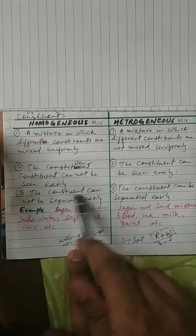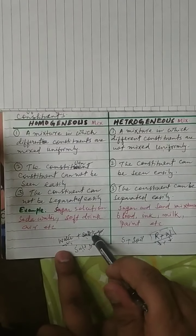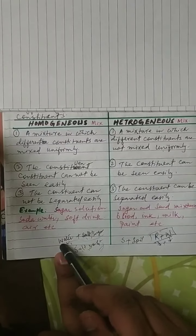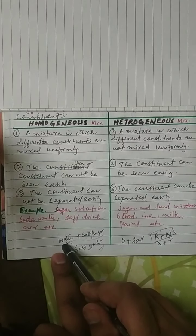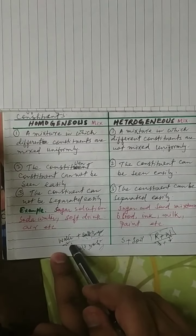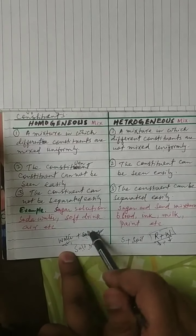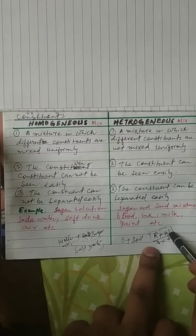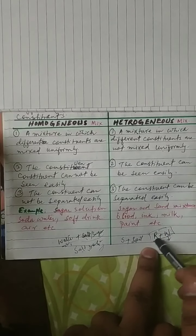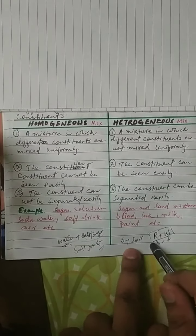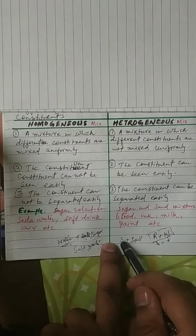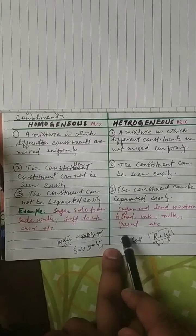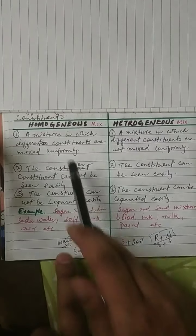Number 3: in a homogeneous mixture, the constituents cannot be separated easily. For example, salt and water — you cannot separate them easily; you would need to boil the solution to separate the two components. But in heterogeneous mixtures like rice and wheat, we can separate the two very easily. Similarly, sand and soil, or sand and iron, can be seen easily and can be separated easily — these are examples of heterogeneous mixtures.